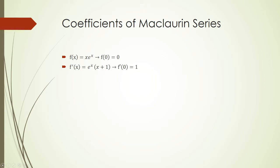f prime of x was e to the x times x plus 1, so f prime of 0 is just 1. f double prime of x is e to the x times x plus 2, so f double prime of 0 is 2.